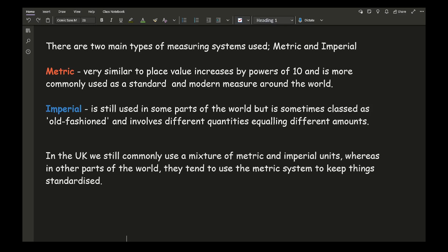Imperial units are still used in parts of the world but are sometimes classed as an old-fashioned type of unit and involve different quantities equaling different amounts. Here in the UK, we commonly use a mixture of metric and imperial units depending on who you're talking to and what you're measuring. In other parts of the world, they tend to standardize and use the metric system to keep things consistent.